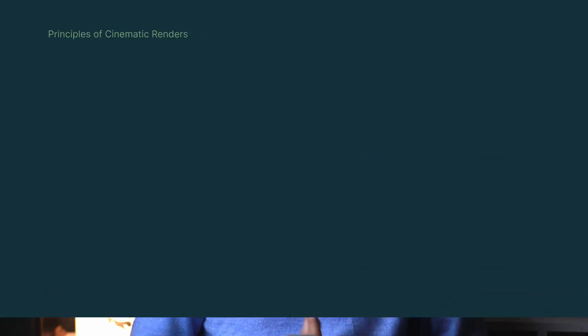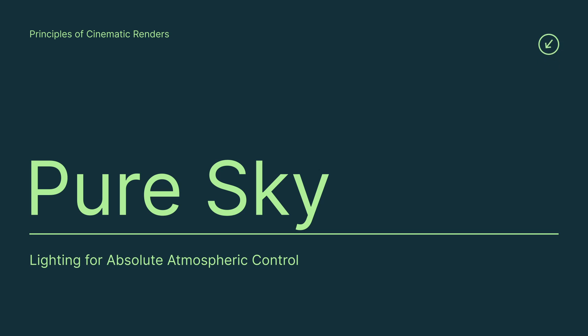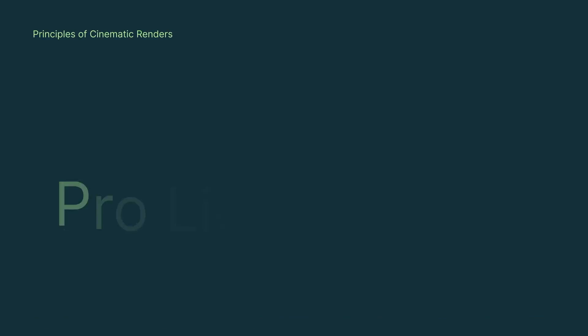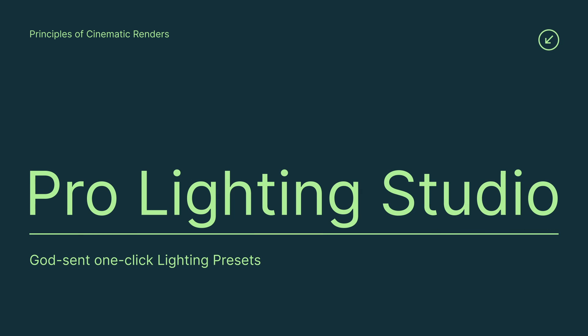For lighting, there are two add-ons that I would highly recommend to speed up your lighting workflow. First is Pure Sky — it makes a very convincing sky and atmosphere: day, night, stars, clouds, dust, haze, you name it. Second is Blender Guru's Pro Lighting Studio — it's a large collection of pre-made lighting setups that you can just apply to models. It's essentially a one-click solution, so this add-on is a godsend.